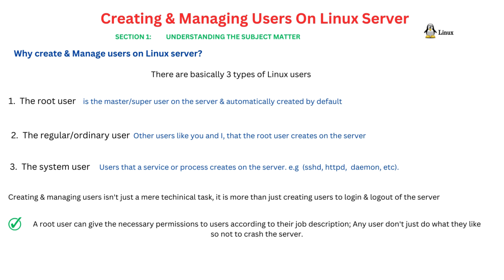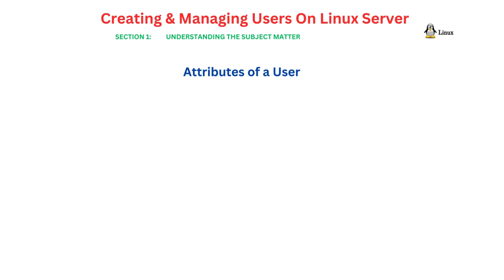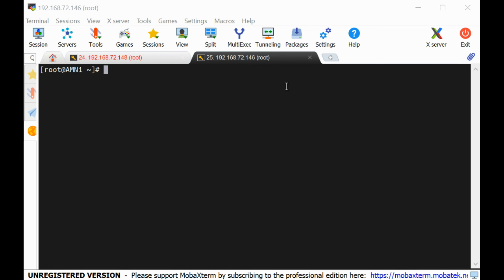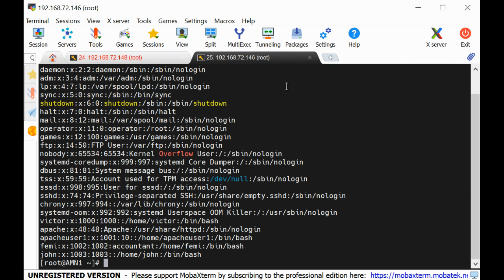Let's look at the attributes of a Linux user. By default, whenever any user is created, the users are stored in the /etc/passwd file. Let's open this file so we can understand the attributes of the Linux user. I've also discussed user attributes in a RHEL 8 series — the link will be in the description box below.